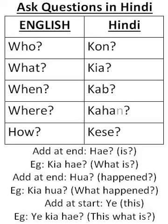You could also try adding 'hua' at the end, which means 'happened'. For example, 'Kya hua?' means 'What happened?' Or 'Kab hua?' means 'When happened?'